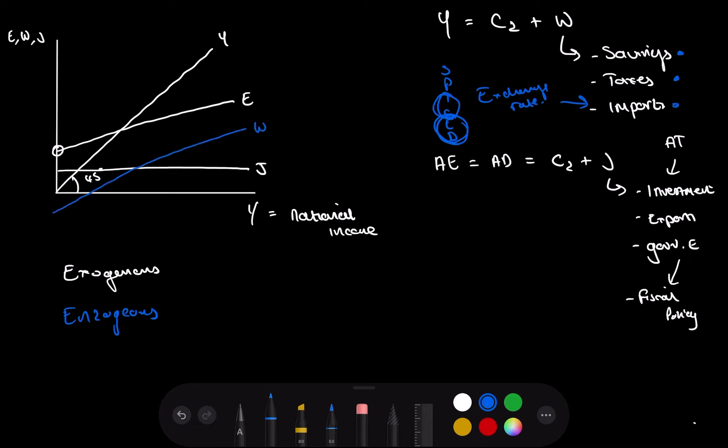And there's withdrawals. So, as you can see here, we have our, this will be YE. And this is the equilibrium national income.